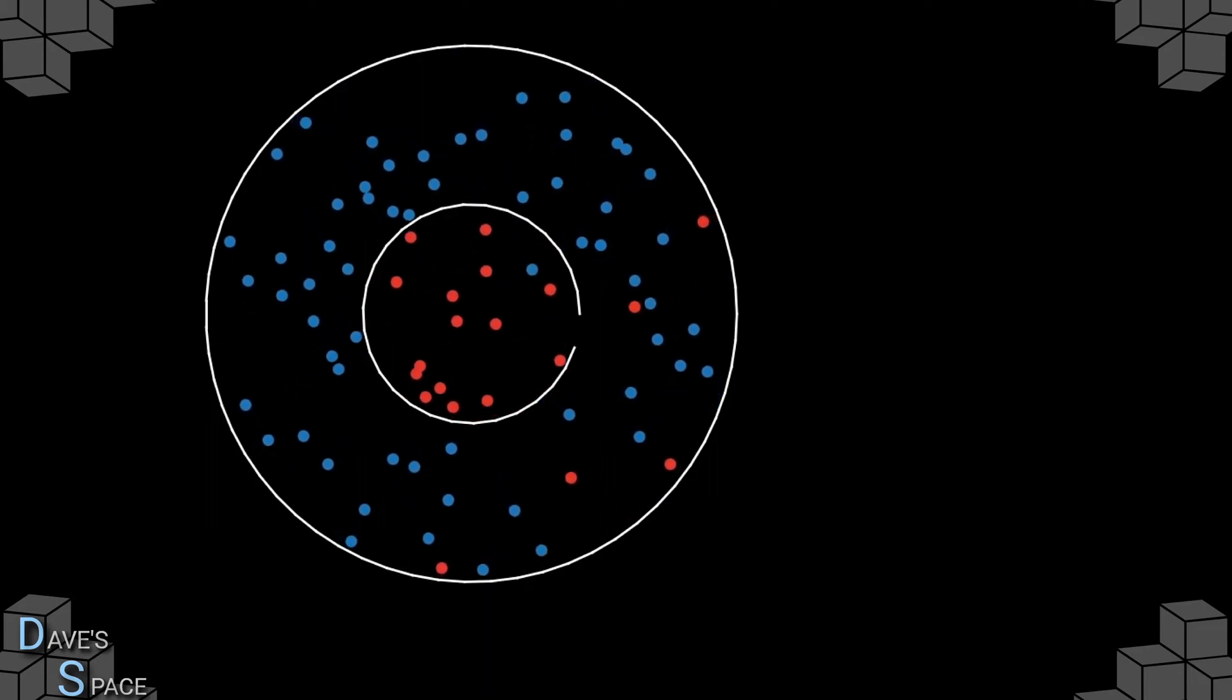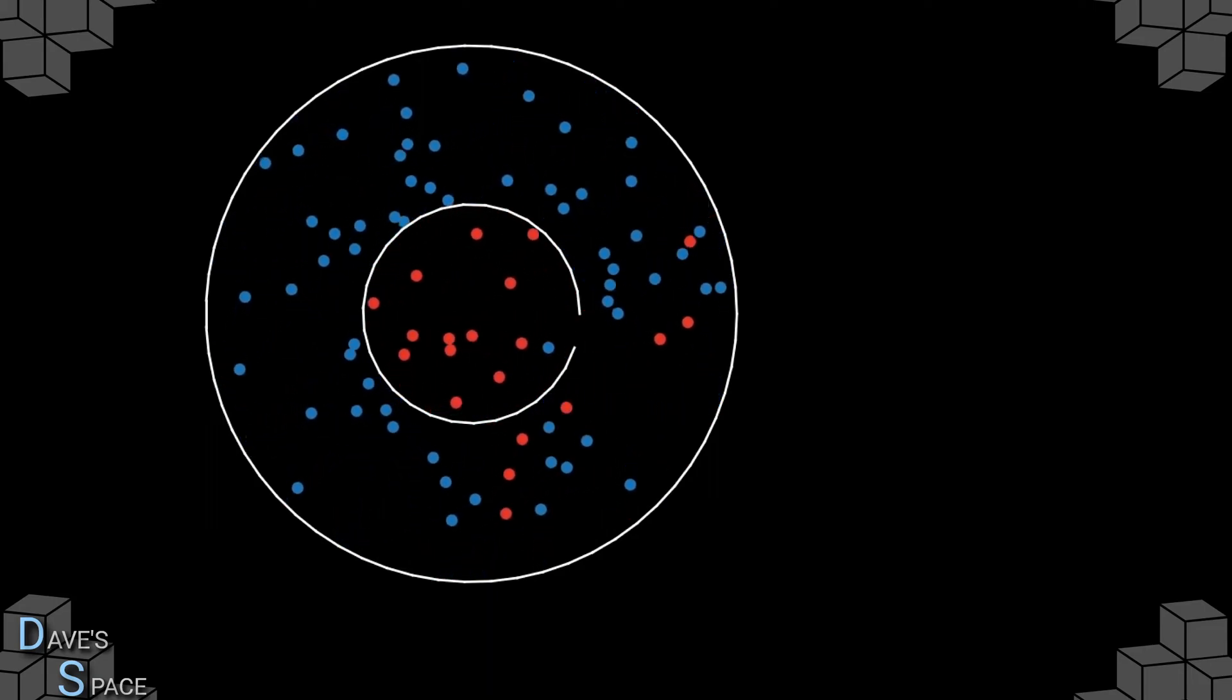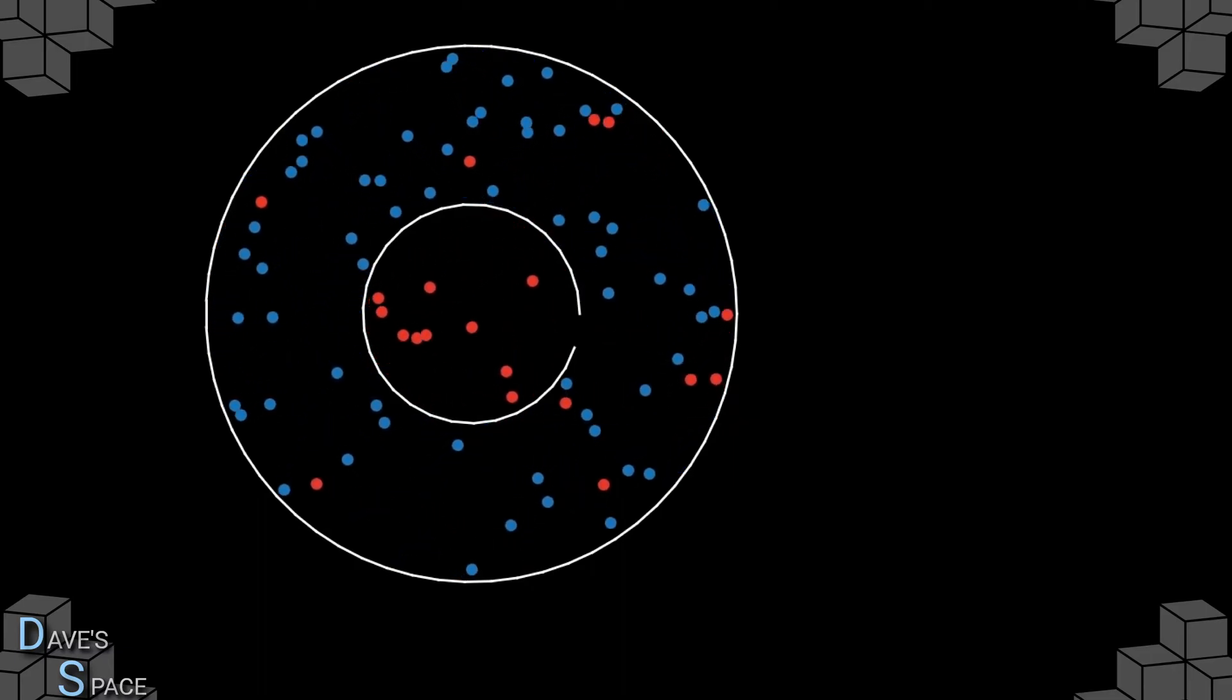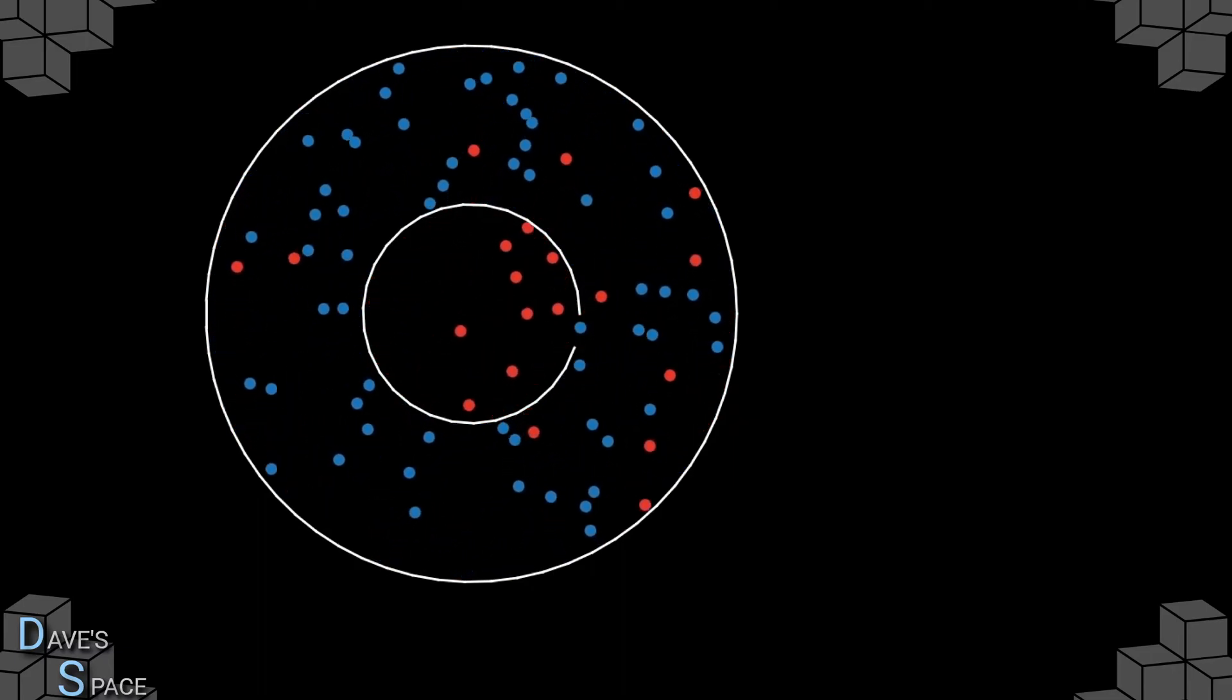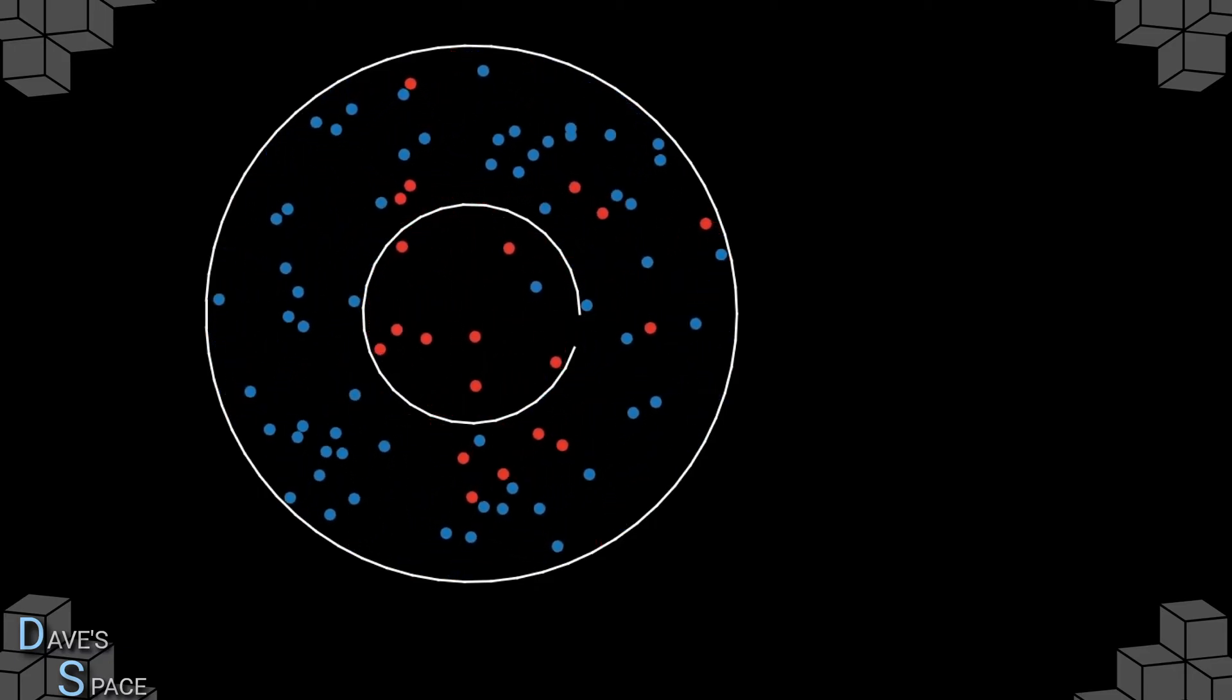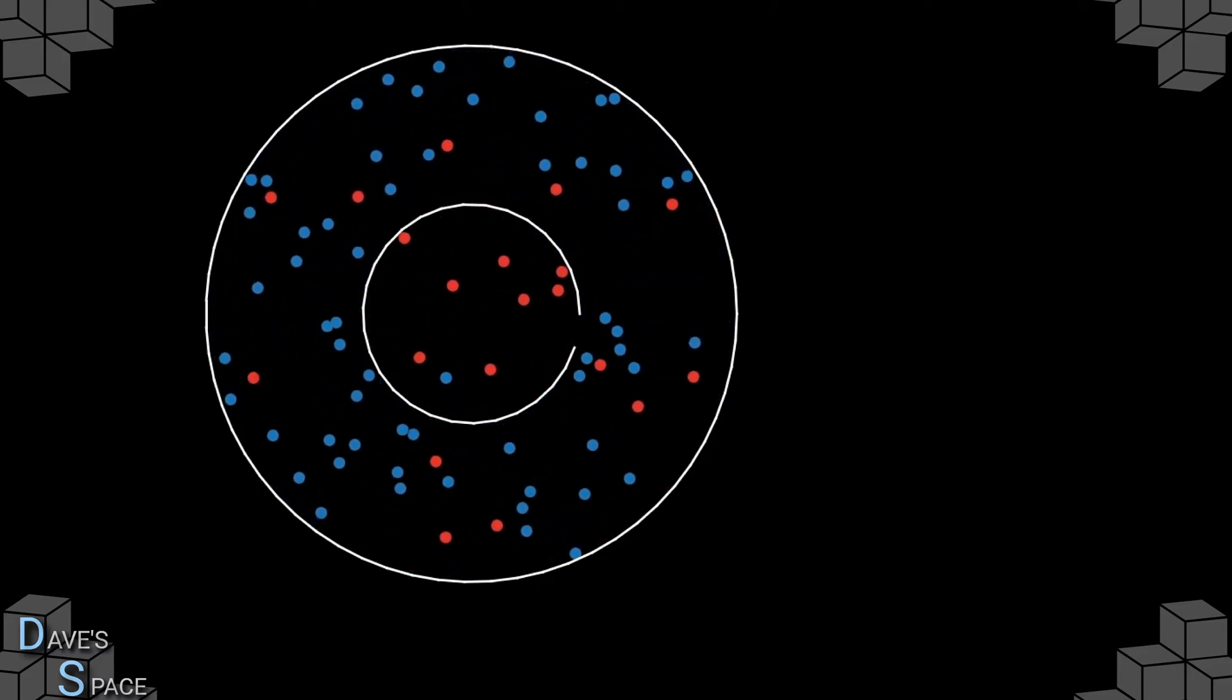You can see that in the same amount of time, we have a much higher rate of diffusion from the center to the outside, and vice versa. The red particles are free to pass on their kinetic energy to the blue particles, giving all the particles, on average, more kinetic energy once enough collisions have been reached.